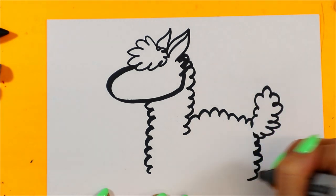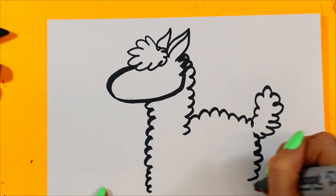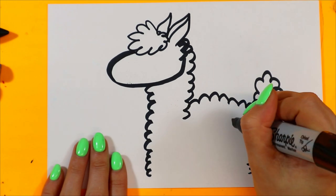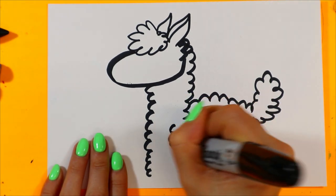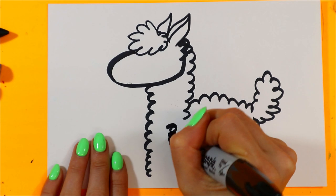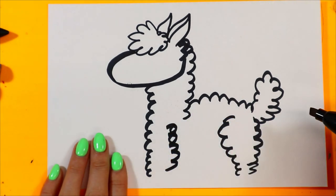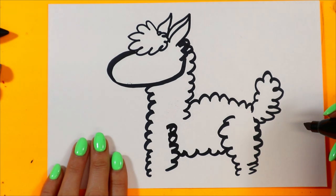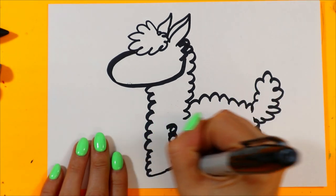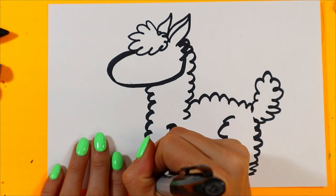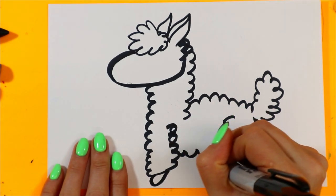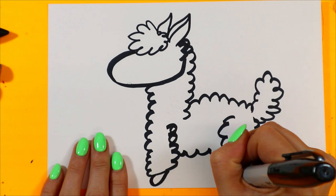Puffy tail. Puffy legs. Down to the bottom. Bring our legs down. Oops. Wrong way. I made a mistake. Whoa. And then a fluffy belly.